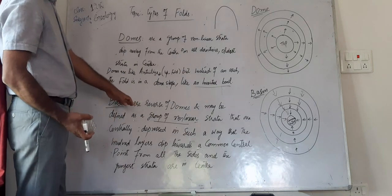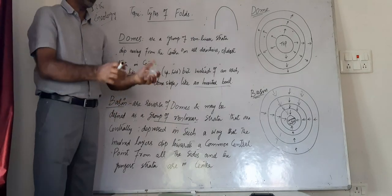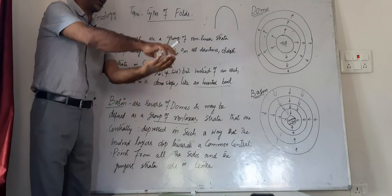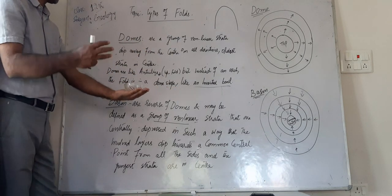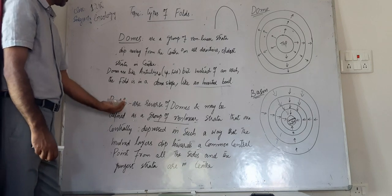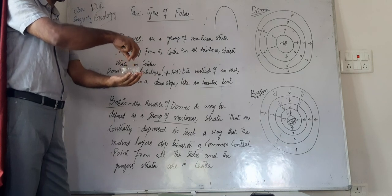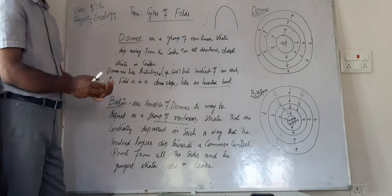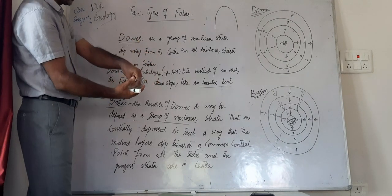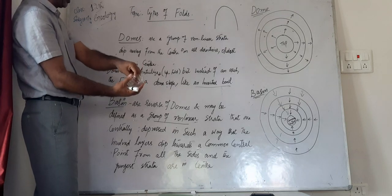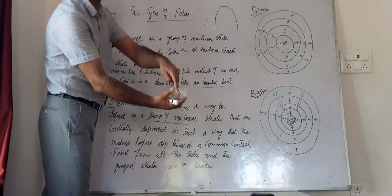Basin fold is the reverse of dome. A group of nonlinear rock strata where the layers are always dipping towards a common central point. These are all layers that are dipping towards a common central point.